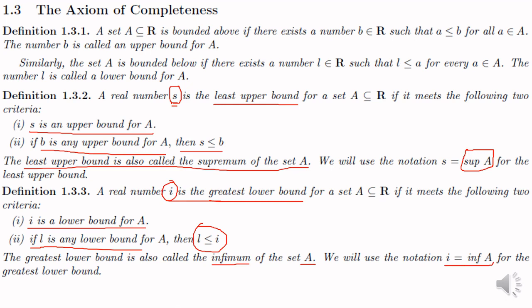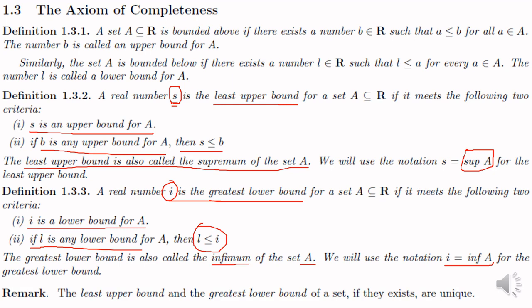Here we have a remark: the least upper bound and the greatest lower bound of a set, if they exist, are unique. That means a set can have at most one least upper bound and at most one greatest lower bound.